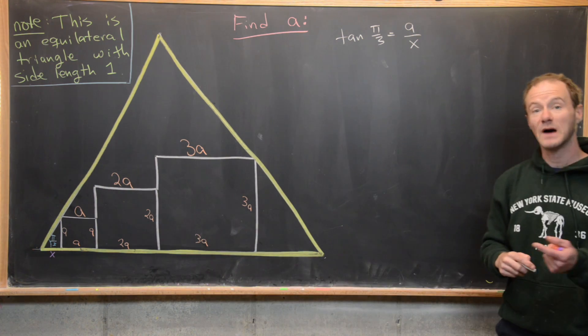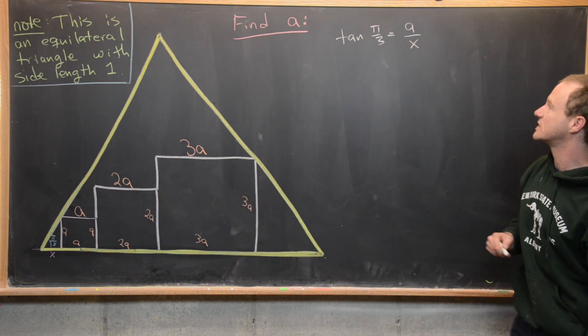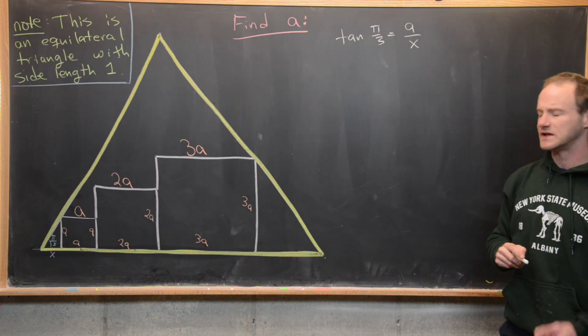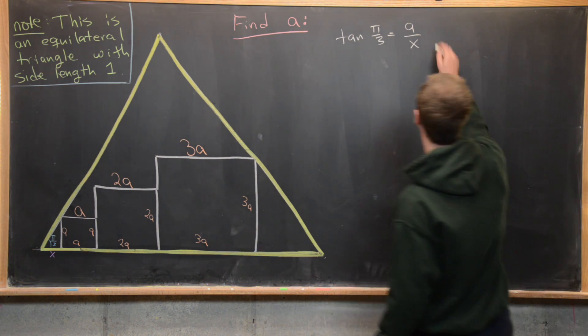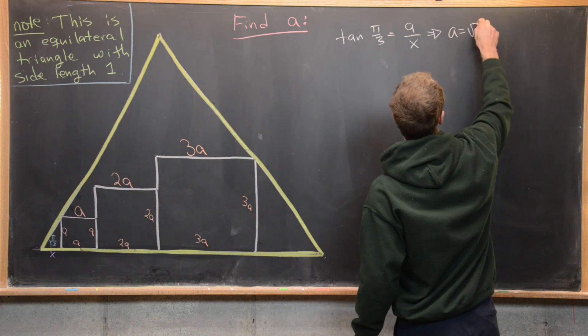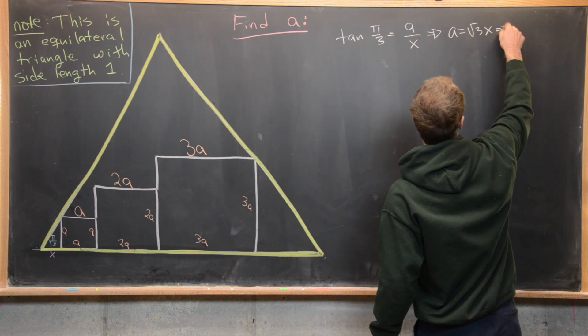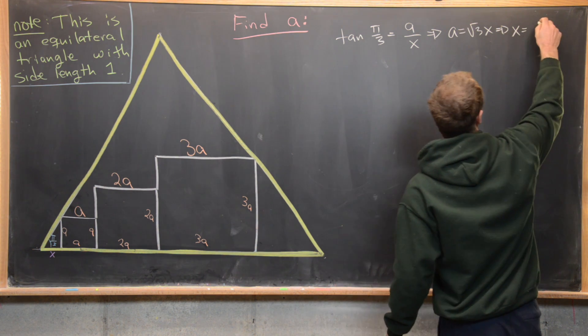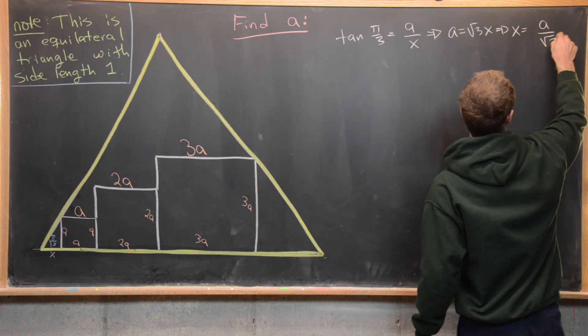Great but we know that the tangent of pi over 3 is equal to the square root of 3 so that tells us that a equals the square root of 3x or that x equals a divided by the square root of 3.